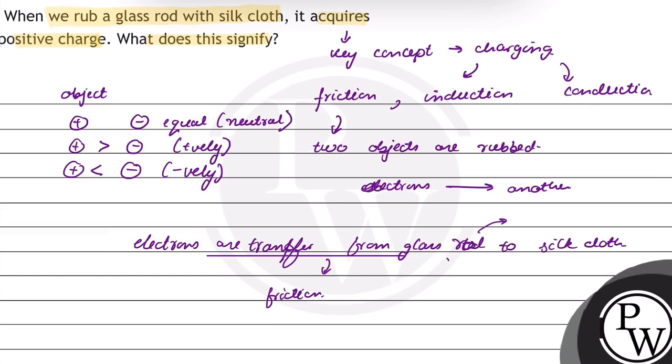As a result, there will be loss of electrons and it acquires positive charge, because there is a greater amount of protons than electrons.